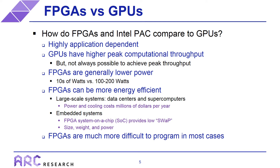FPGAs are also very commonly used in embedded systems. FPGAs can provide system-on-a-chip solutions, where your entire system is just the FPGA itself. This is attractive for applications that need low SWaP — size, weight, and power — such as small, low-power, battery-operated embedded systems, where FPGAs have a significant advantage. Another point is that FPGAs tend to be much more difficult to program than GPUs — there is likely not a single person in the FPGA community who would disagree with that. One of the goals of this set of training modules is to try to improve that situation.